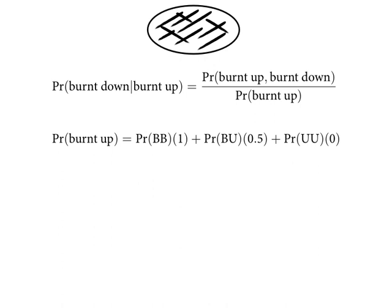Let's assume that the prior on the pancakes is that I selected one at random — that's an assumption we need to introduce. You always need a prior; priors let you average, they're required. So that gives us a probability of one third for each pancake. This becomes one third times one, plus one third times a half, which is a half — also one third times zero, which I drop. So now we can get the conditional probability. The probability of a burnt-burnt pancake is one third. So the conditional probability that the downside is burnt, given the upside is burnt, is one third divided by a half, which is two thirds — it's not a half.